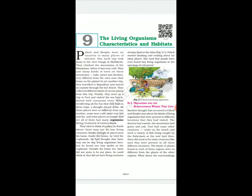We shall go through the chapter. You have seen that there are different living organisms around you. There are different kinds of living organisms in different regions. For example, if we are talking about a forest, then there are wild animals and different trees. If we are talking about a coastal region, then the trees there are different.